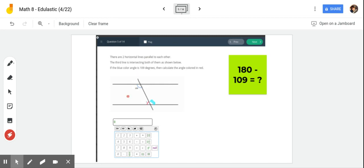If the blue colored angle right here is 109 degrees, then calculate the angle that's colored in red. Okay, so let's look at these. If I look at my angle relationships, I look right away and see this is on the inside of the line.